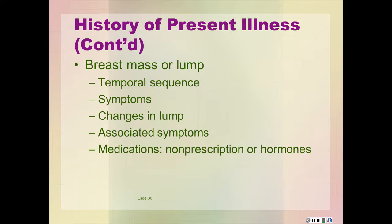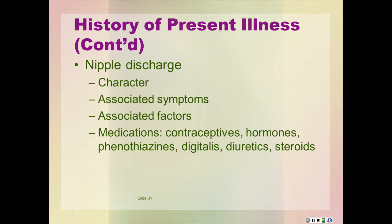If the chief complaint is a breast mass or lump, questions should include the temporal sequence using the OLD CARTS acronym. The length of time since the lump was first noticed. Does the lump come and go or is it always present? What is its relationship to menses? Is there tenderness or pain? Is there dimpling or changes in contour? Has there been any change in lump size, character, or its relation to menses?